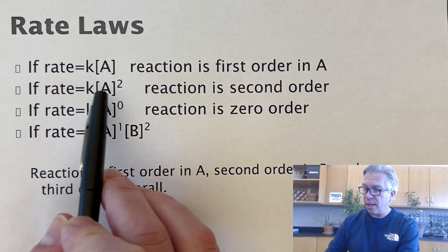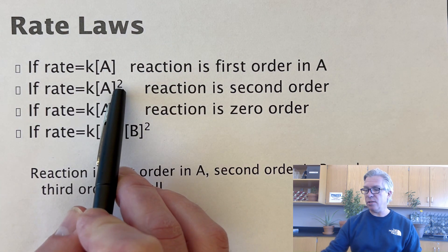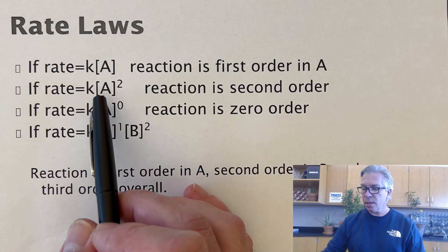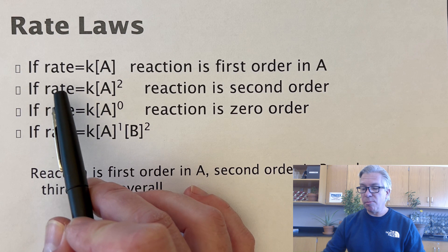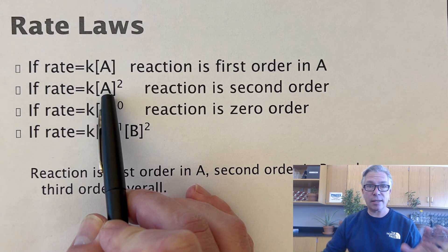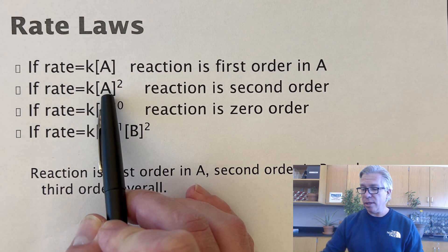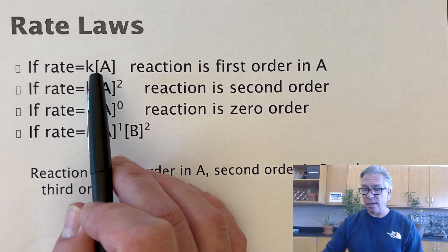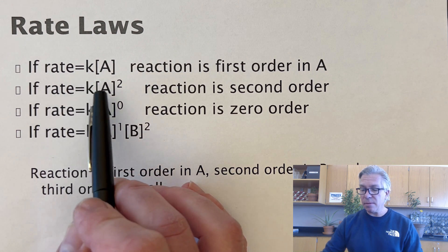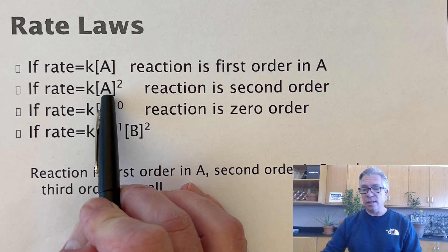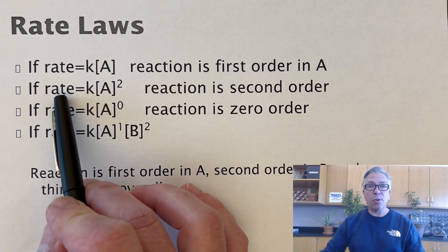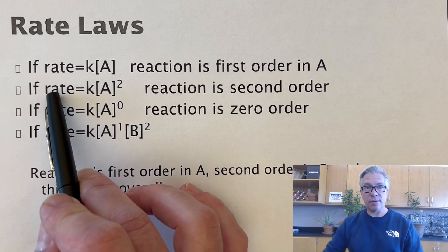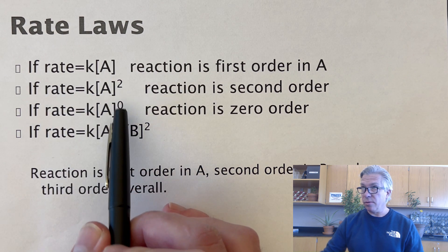But what if the exponent was a 2, making it second-order? In that case, the rate is proportional to the square of how much reactant A is present. Whereas in first order, if I double the concentration of A, I would double the rate, in second order, if I double the concentration of A, the rate would go up by a factor of 4 — because we're squaring the doubling.